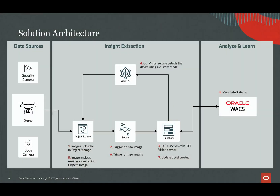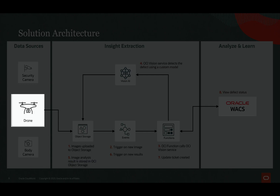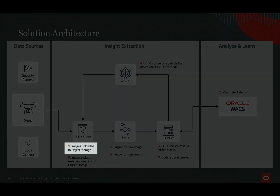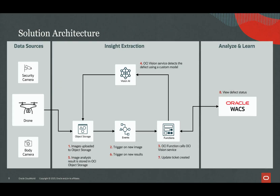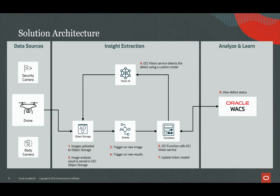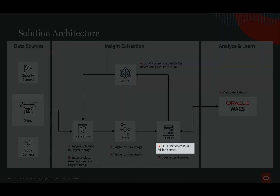To summarize the process: first we gather data sources, in this case from drones. The data is uploaded to OCI object storage. An event triggers on new images, at which point OCI function calls the OCI Vision service.